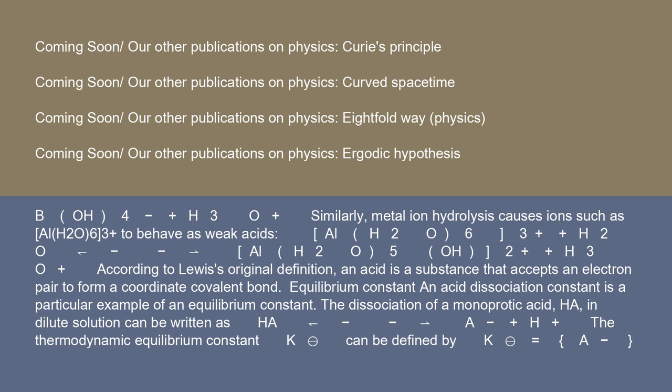Similarly, metal ion hydrolysis causes ions such as [Al(H₂O)₆]³⁺ to behave as weak acids: [Al(H₂O)₆]³⁺ + H₂O ⇌ [Al(H₂O)₅(OH)]²⁺ + H₃O⁺.